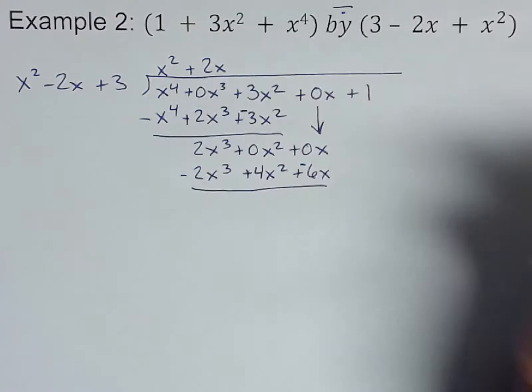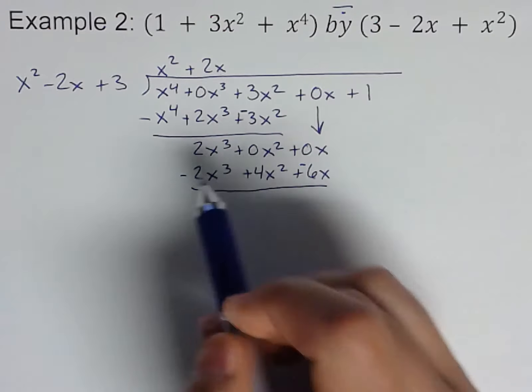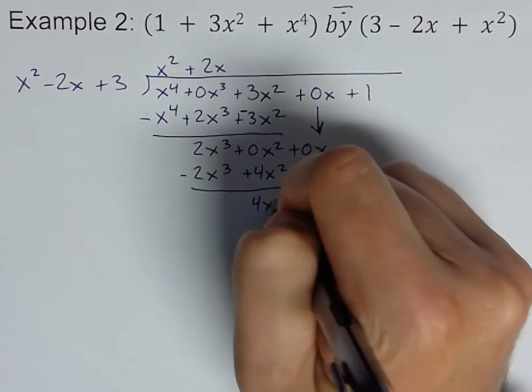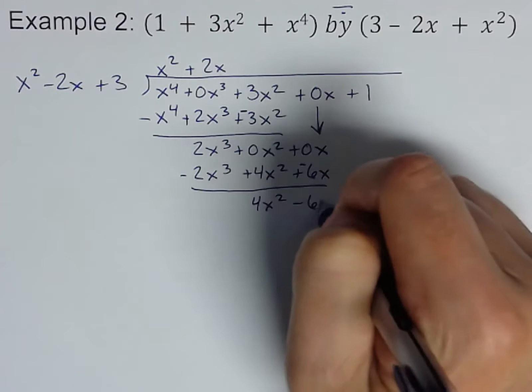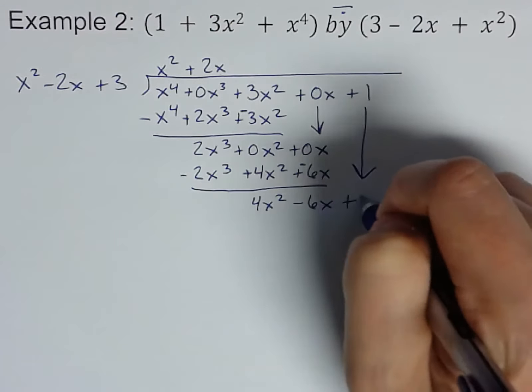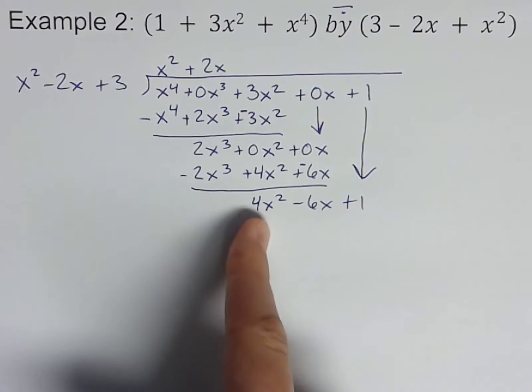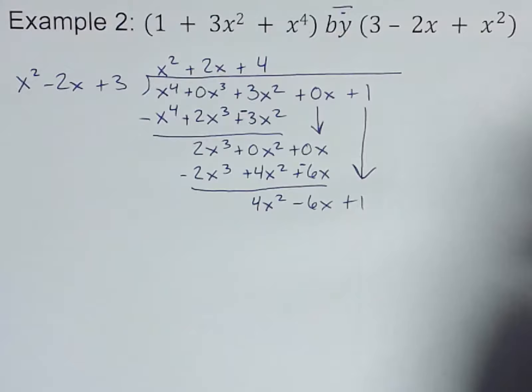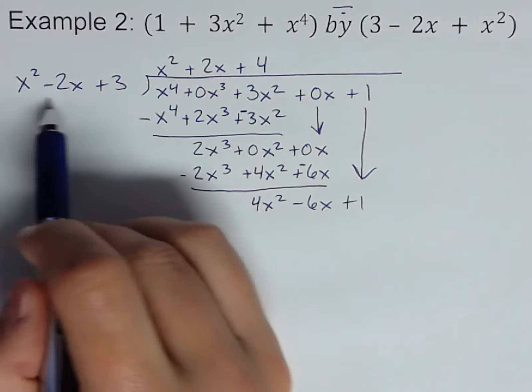Not a surprise, right? We've already seen this. Change those signs, change those signs. First term goes away. We have 4x squared minus 6x. We're not done. There's one more number out here, so bring it down, plus 1. x squared into 4x squared, oh that'll go four times, right? Four times that, so plus 4.